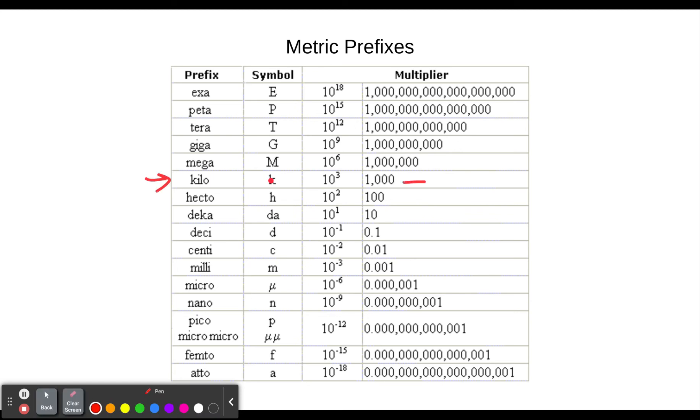Okay there's three in particular that we'll be looking at in this concept builder. We're going to be looking at kilo which means a thousand. We're going to be looking at desi. No we aren't. I take that back. We are not looking at that. We are looking at kilo, we are looking at centi, and we are looking at milli.